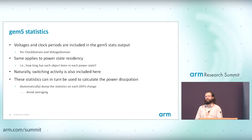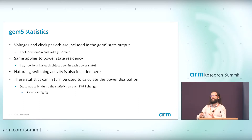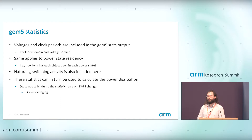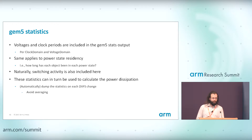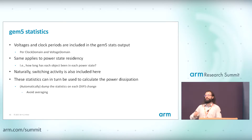Voltage and clock periods are reported in the GEM5 statistics, reported per clock domain and per voltage domain. The same applies to power state residency — GEM5 statistics tell you, for example, that the CPU spent 50% of time in the on state and the rest in the WFI state. Switching activity is also included, enabling use of the power models. One important thing: the system automatically dumps statistics when you change frequency. If you didn't do this, you'd end up averaging over multiple frequencies and voltages, resulting in bad power numbers.